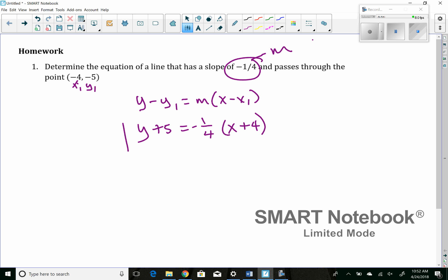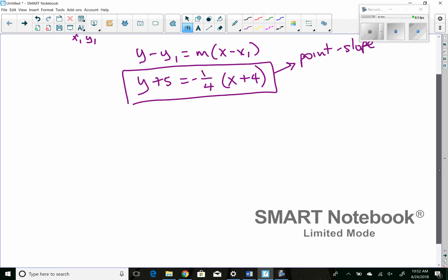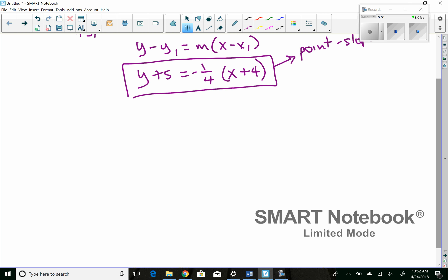This is the equation of the line in what we call point-slope form. Now if the question asks us to find this in y equals mx plus b form, which is called slope-intercept form, what we'd have to do is some algebra. The y plus five would stay the same, the negative one-fourth gets distributed, and then we can subtract six from both sides. So we got y equals negative one-fourth x minus seven.